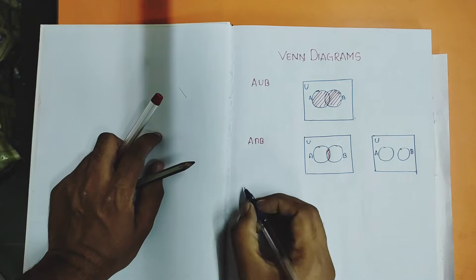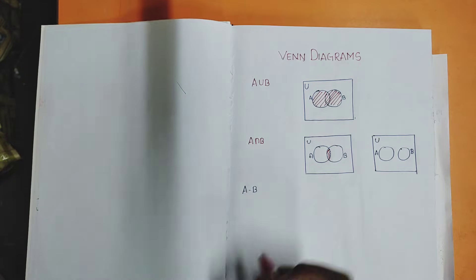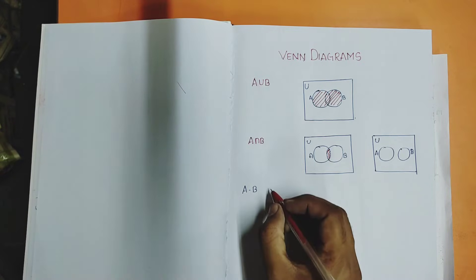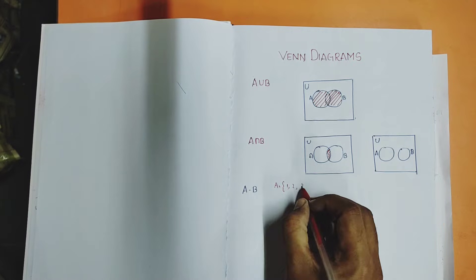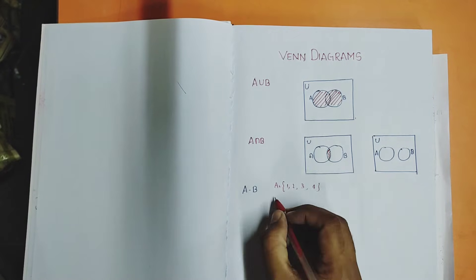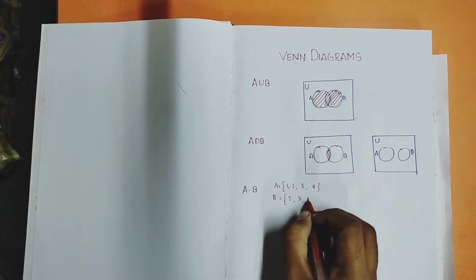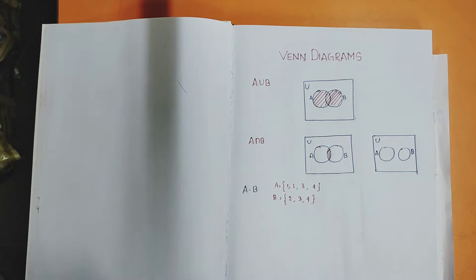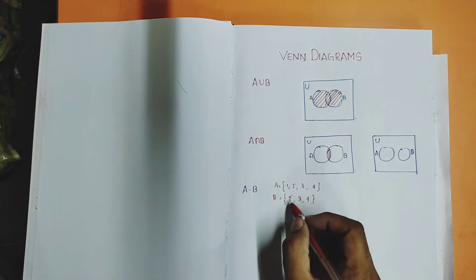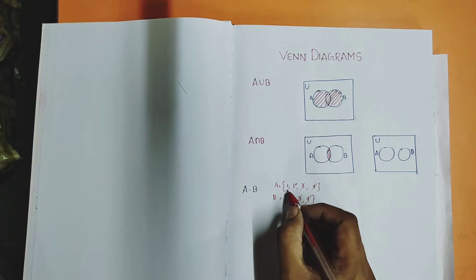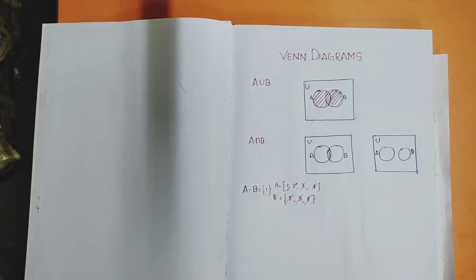Next, what is the Venn diagram for A minus B? What is A minus B? Let me take an example. A is equal to {1, 2, 3, 4} and B is equal to {2, 3, 4}. Now if I do A minus B, I have to cancel the terms which are common. The remaining one is A minus B. So A minus B is just {1} — only element 1 will be in the set.